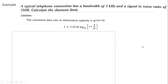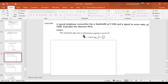Problem 1: A typical telephone connection has a bandwidth of 3 kHz and a signal-to-noise ratio of 32 dB. Calculate the Shannon limit. We know the formula: I = 3.32 × B × log₁₀(1 + S/N). Given are 3 kHz and 32 dB. Remember, in Shannon's formula, S/N must be in linear power ratio, not decibels. So the first step is to convert 32 dB into a power ratio.